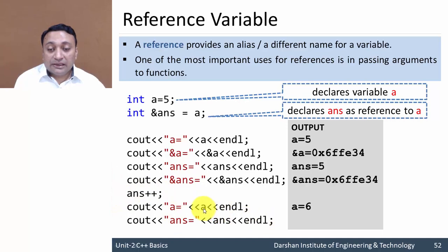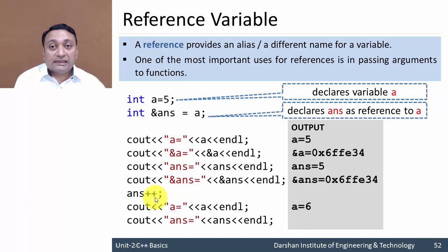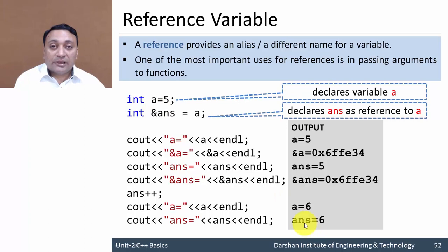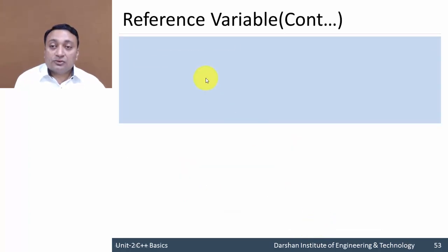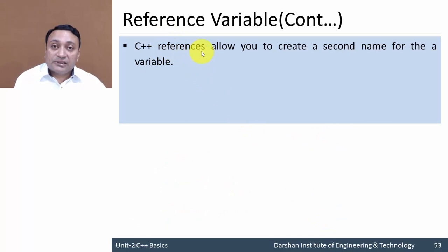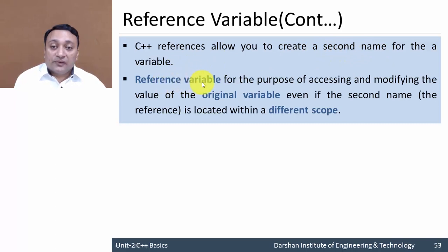If I perform 'answer++', it adds one to the value stored at that location. If I then print 'a', it displays 6. So making a change through 'answer' affects variable 'a'. Printing 'answer' again also displays 6. C++ references allow you to create a second name for a variable for the purpose of accessing or modifying the value of the original variable.